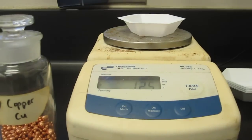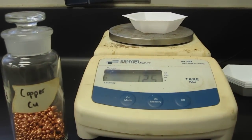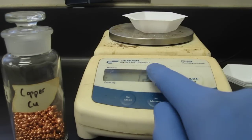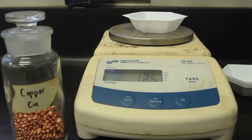In fact, there are two certain digits, the 1 and the 2, and the last digit is always an approximation. And this is what you find with all measuring devices.